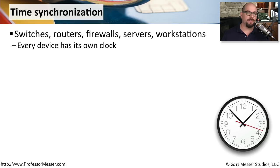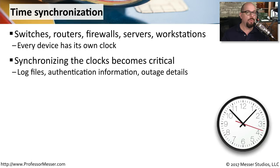If you decide to collect logs from all of these different devices, one challenge you'll face is with the timestamps inside those logs. Each switch, router, firewall, server, workstation, mobile device, and anything else connected to the network has its own internal clock. So we need to synchronize all of these devices to one single clock. If we want to correlate what happened on a switch with what was happening on a router and a file server at exactly the same time, we need some way to synchronize all of those things together.